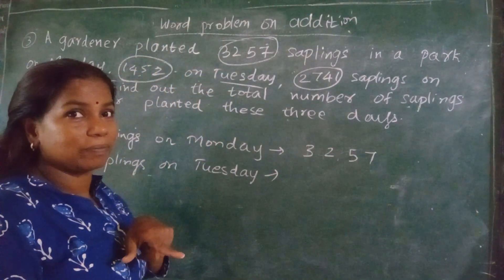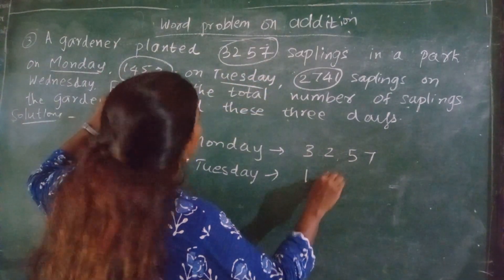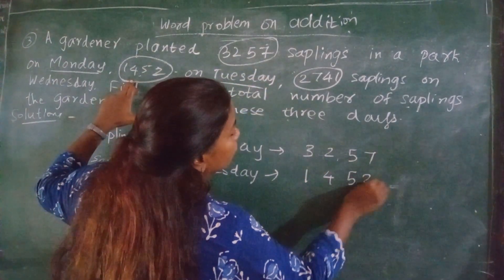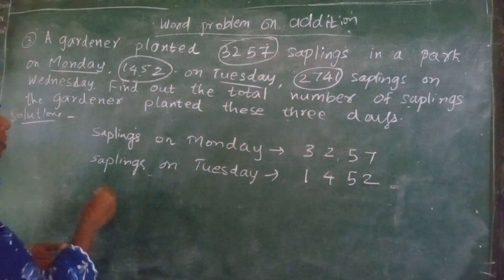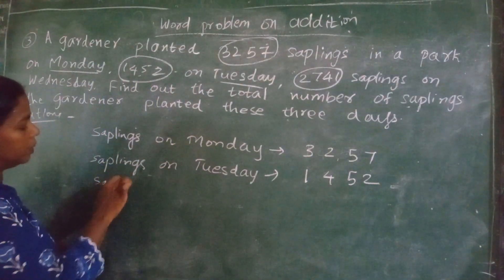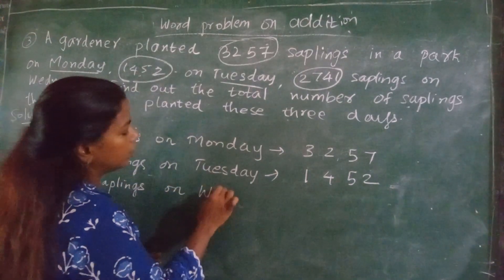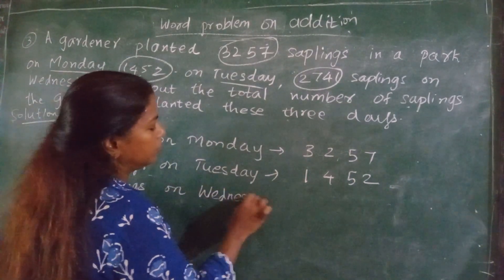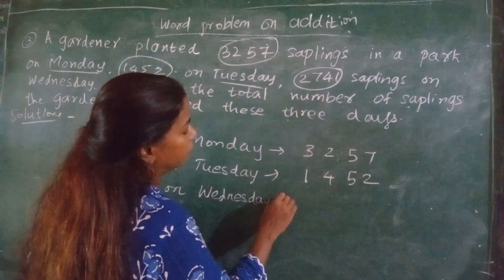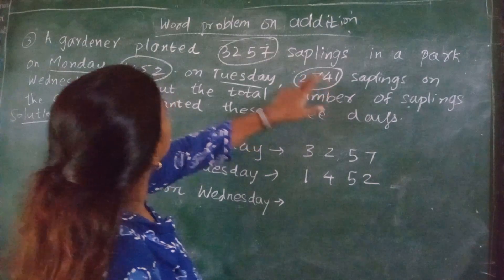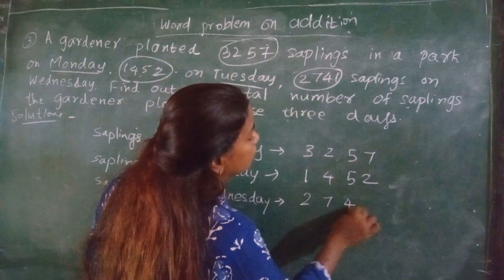Then on Tuesday: 1,452. Then which day? Wednesday. Saplings he planted on Wednesday — W-E-D-N-E-S-D-A-Y — how much? 2,741.